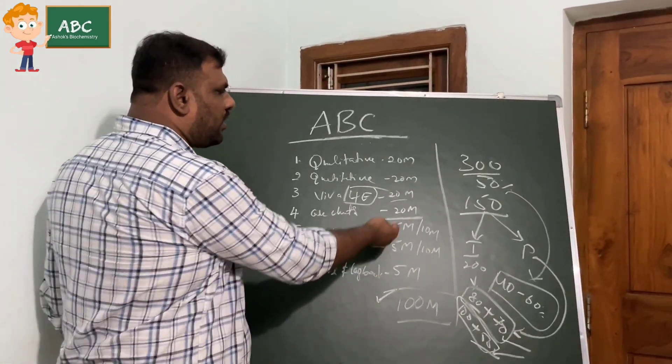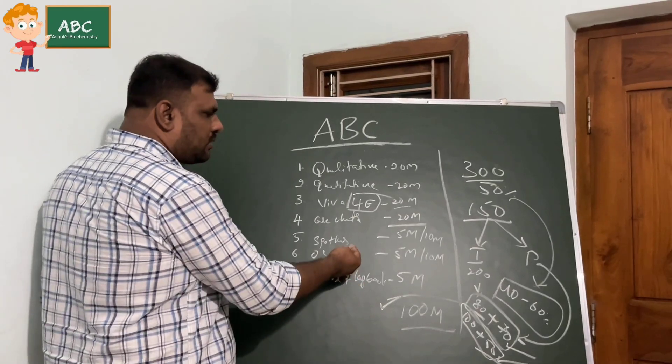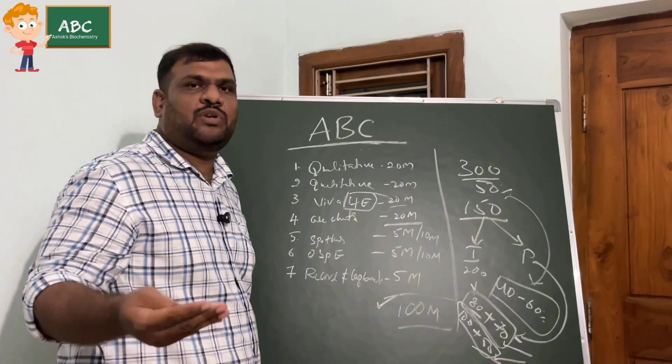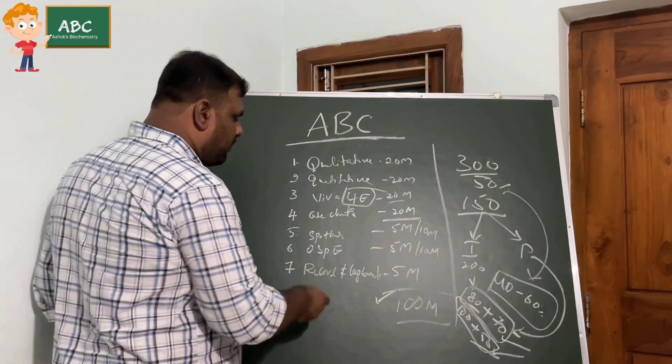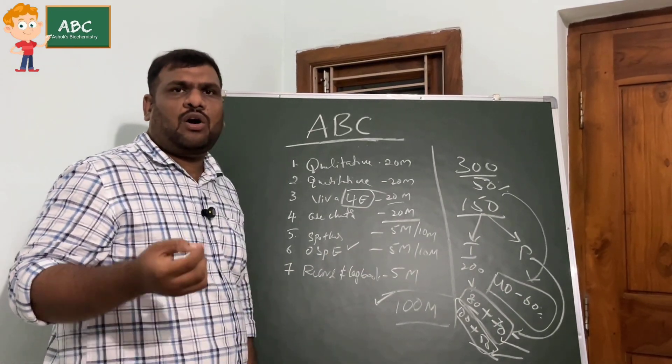Then spotters - few colleges will give you five marks, some ten marks. You need to identify the spotter and write minimum two to three points about that spotter. When it comes to ASPI, ASPI is nothing but how you can observe, how you're doing the experiment, how you're performing the experiment.